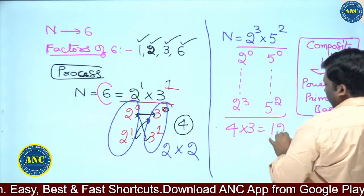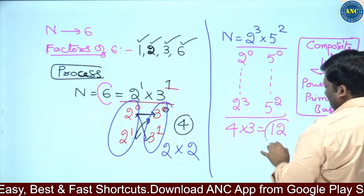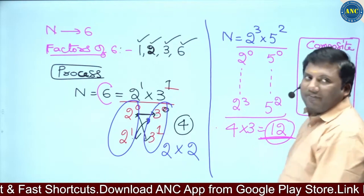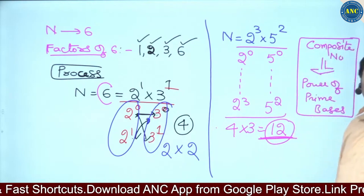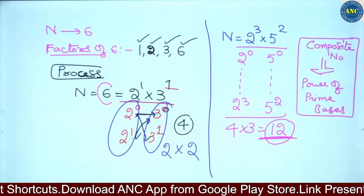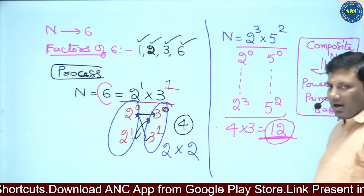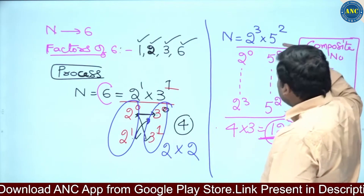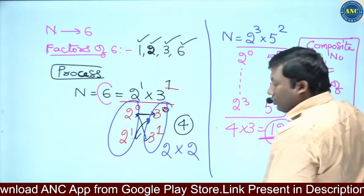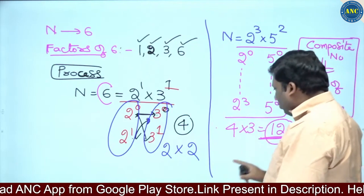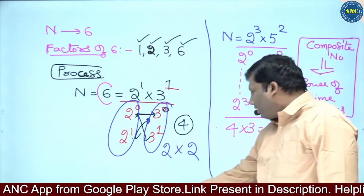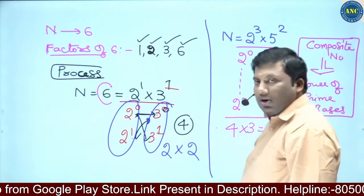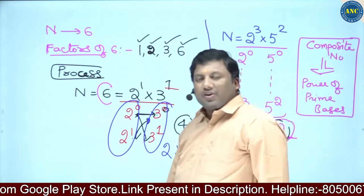From power 0 to 3, there are 4 cases. From power 0 to 2, there are 3 cases. So 4 × 3 = 12. How many factors are there for this number? There are 12 factors for this number.